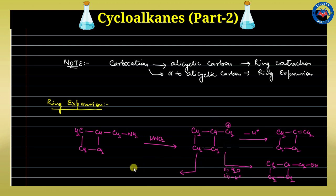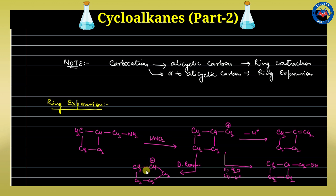Bond migration occurs, and this step is known as the Demyanov rearrangement, resulting in a five-membered ring with a positive charge. Again, two things can happen: nucleophile addition or proton elimination. If a proton is eliminated, we get cyclopentene formation.